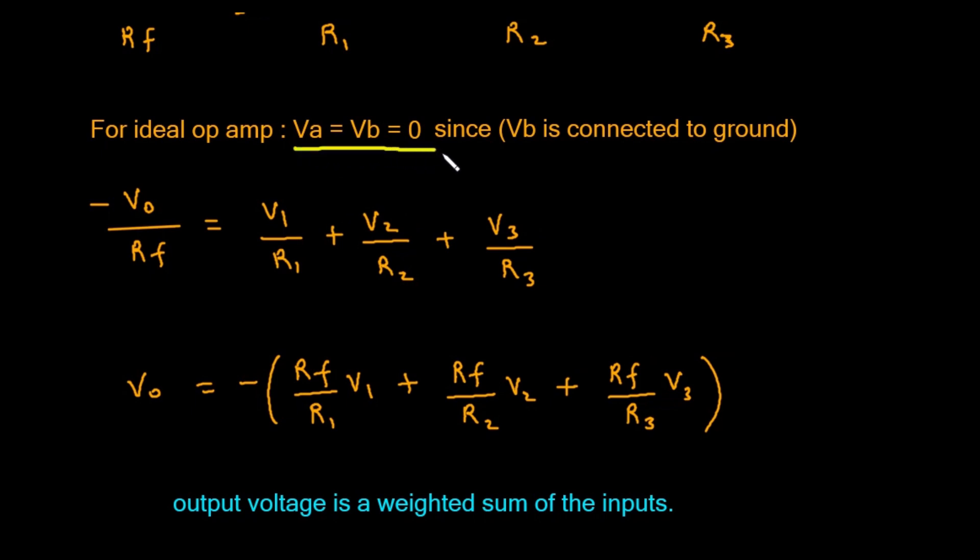This is a famous and powerful concept in op-amp circuits called virtual ground. The point Vi isn't physically tied to ground, but the op-amp's action makes it behave exactly as if it were, holding it at a steady 0 volts. As the note on the image says, for ideal op-amp, Vi equals Vb equals 0, since Vb is connected to ground.